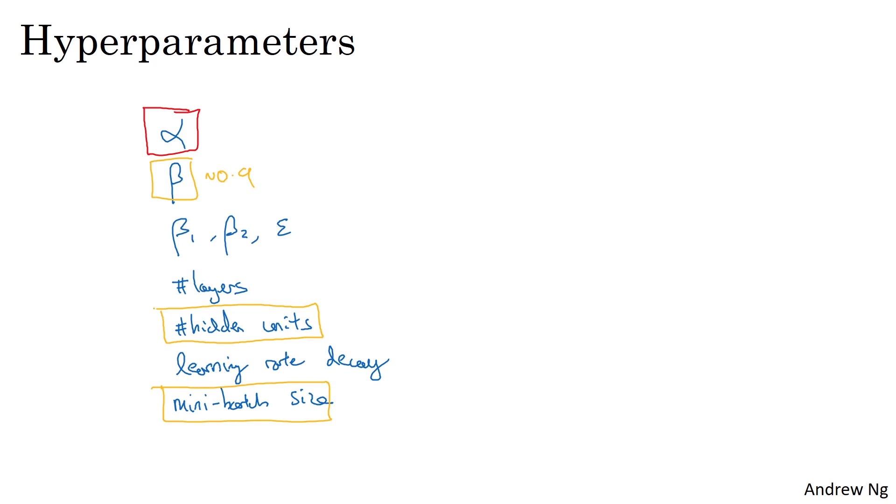Often I'll also fiddle around with the hidden units. Of the ones I've circled in orange, these are really the three that we'll consider second in importance to the learning rate alpha. And then third in importance, after fiddling around with the others, the number of layers can sometimes make a huge difference, and so can learning rate decay.